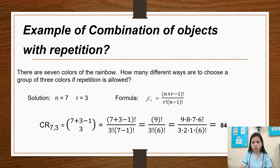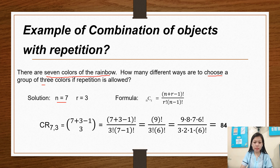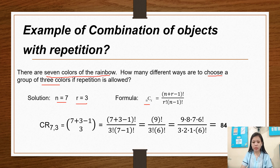Example: There are 7 colors of the rainbow. How many different ways are there to choose a group of 3 colors if repetition is allowed? The given numbers are N = 7, which is the total number of colors, and R = 3 colors to choose. The formula is C(N,R) = (N + R - 1)! / (R! × (N - 1)!).